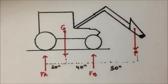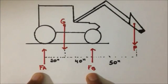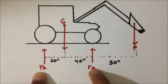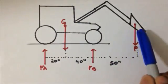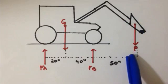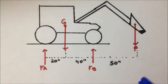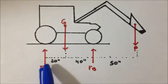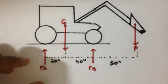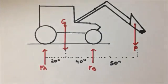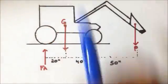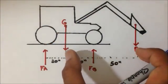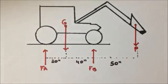Here I have a representation of problem 4.1. These support reactions I designated them FA and FB, and they are directed upward, supporting these wheels. We also have the center of gravity, which is directed downward toward the center of the earth. Same thing with the weight of the gravel, which I designated P, directed downward. FA is 20 inches away from the center of gravity, FB is 40 inches away, and P is 90 inches away from the center of gravity.